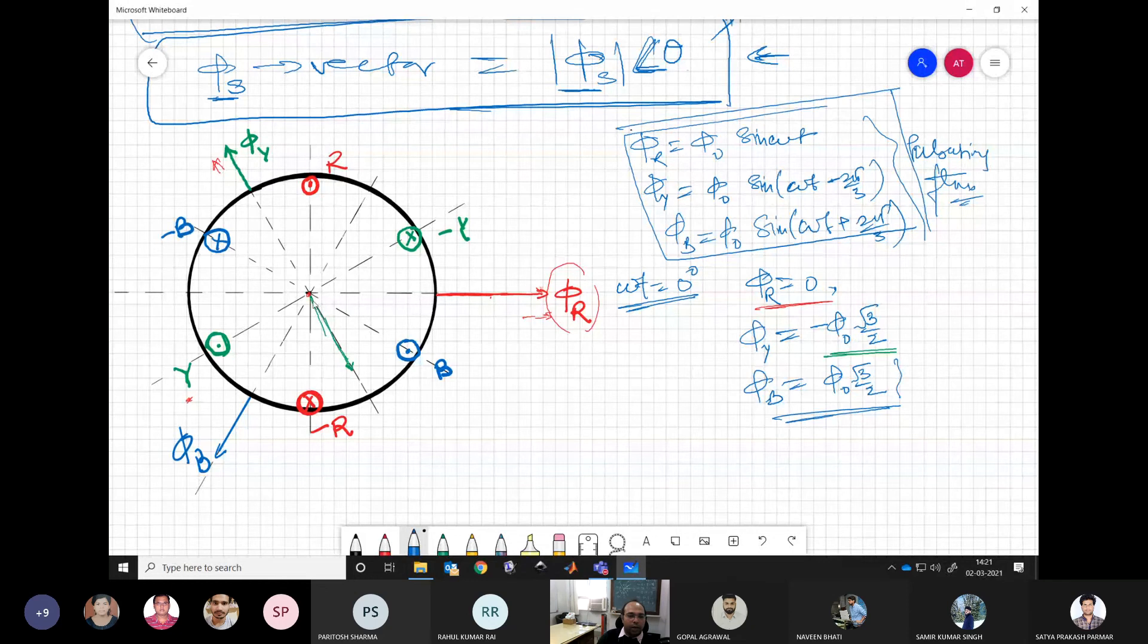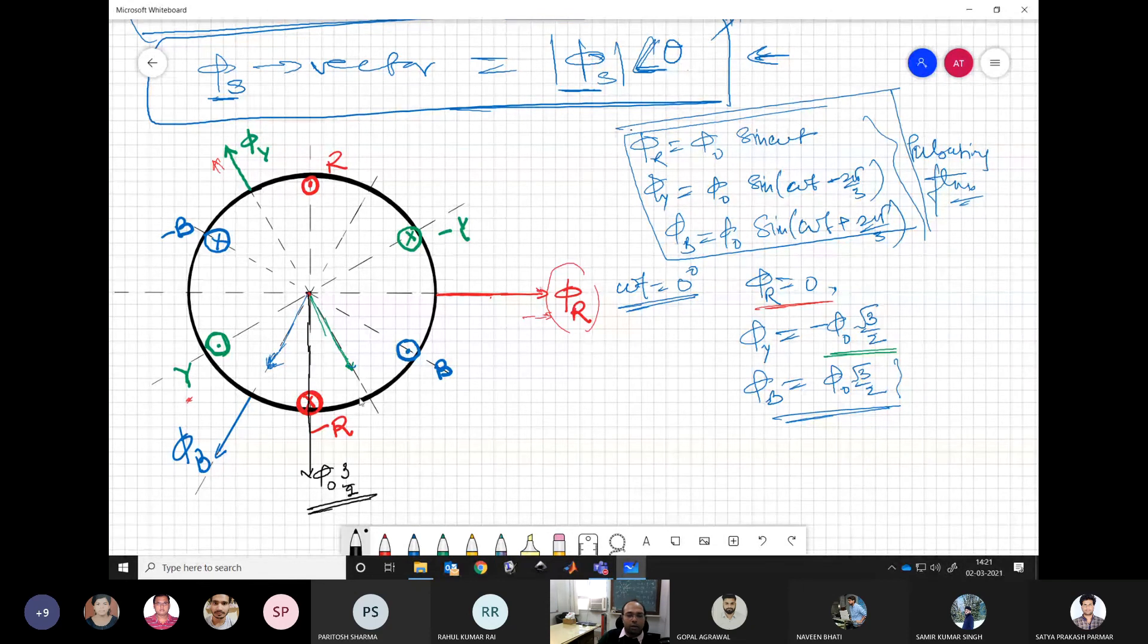And then we have B which is positive, and it has value phi naught root 3 by 2. So again it comes along the positive axis. So this is coming somewhere here. So when you sum this vectorially, of course you will get a net vector which will be along this axis, and this will have magnitude of 3 by 2 times phi naught.